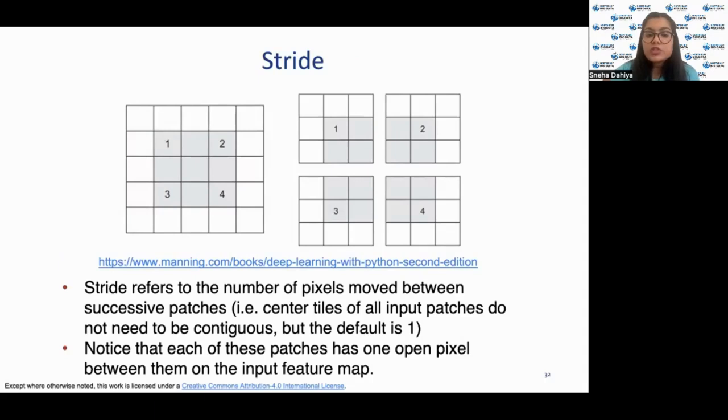Now let's talk about strides. Strides basically refers to the number of pixels moved between successive patches, that is center tiles of all input patches do not need to be contiguous but the default is 1. Notice that one of these patches has one open pixel between them on the input feature map. However, strides are rarely used in convolutional neural networks.